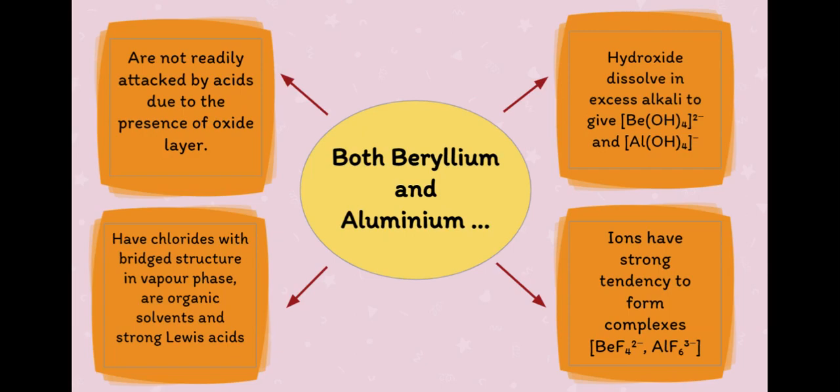Hydroxides of beryllium and aluminium dissolve in excess alkali to give Be(OH)4^2- and Al(OH)4^- ions respectively.